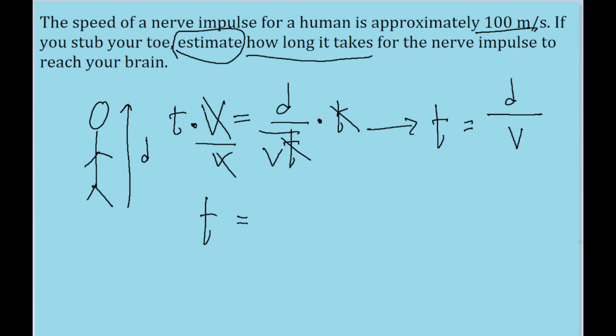We're pretty much going into it knowing that we can't get a lot of precision anyway. So I'm just going to pick a value, I'm just going to say 1.7 meters, and divide it by the speed we're given, 100 meters per second.